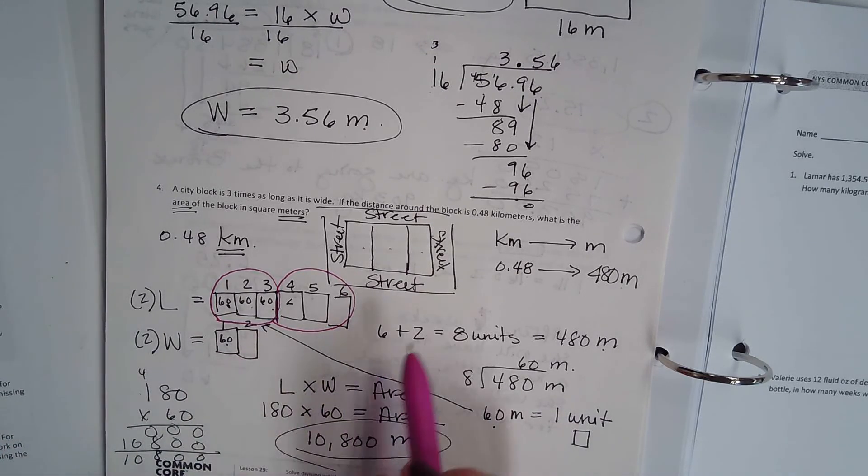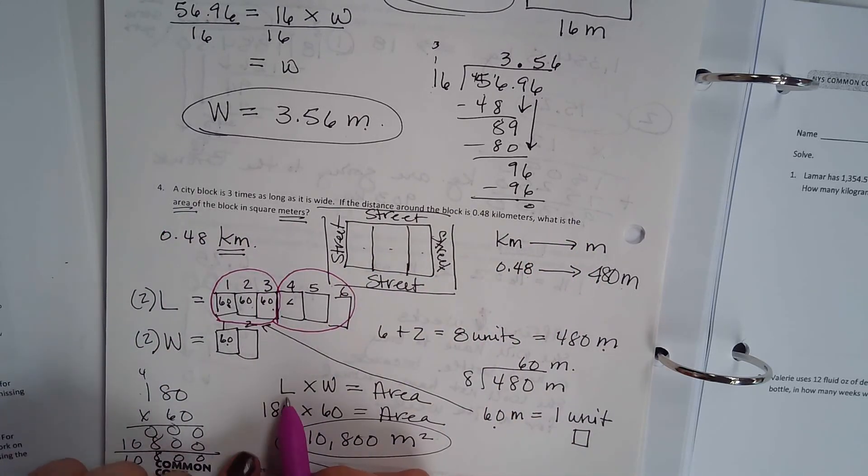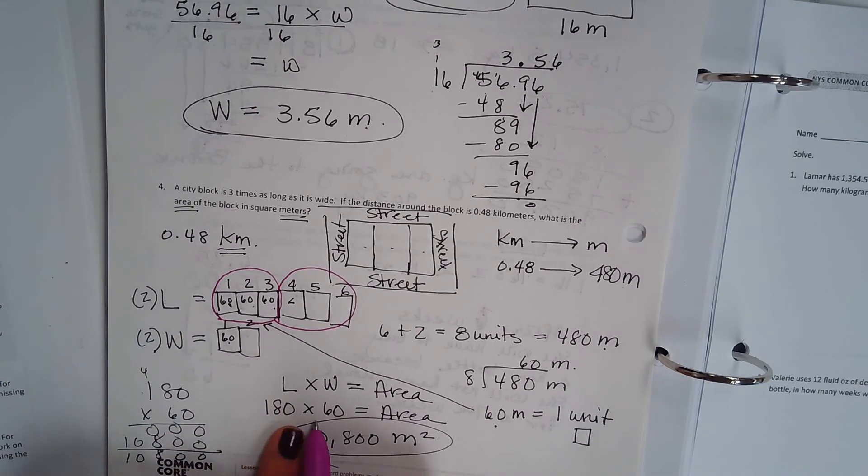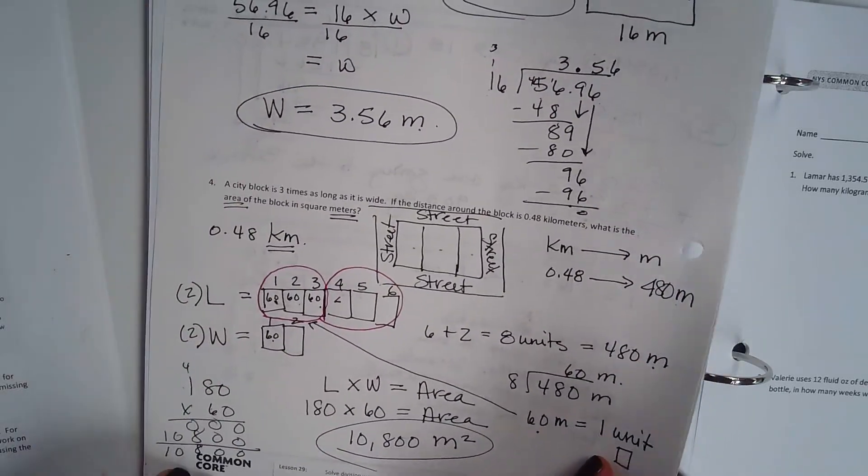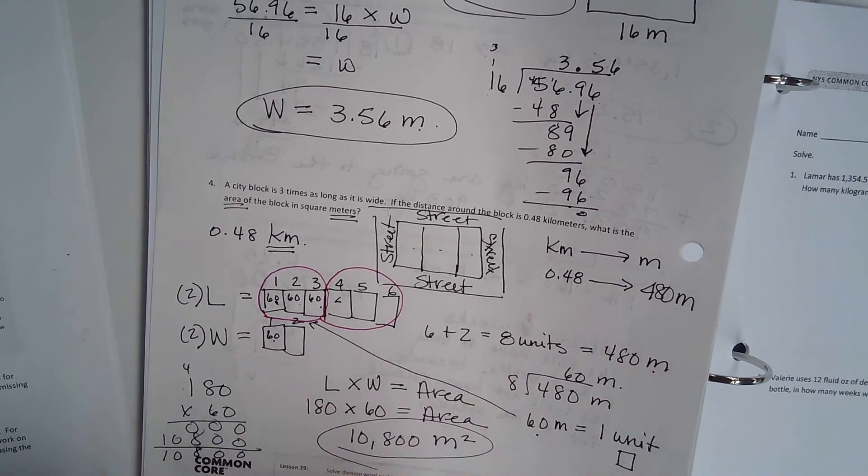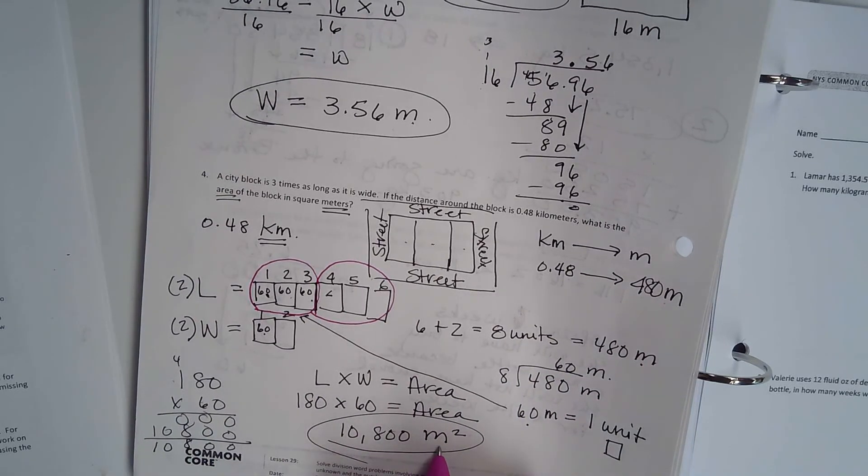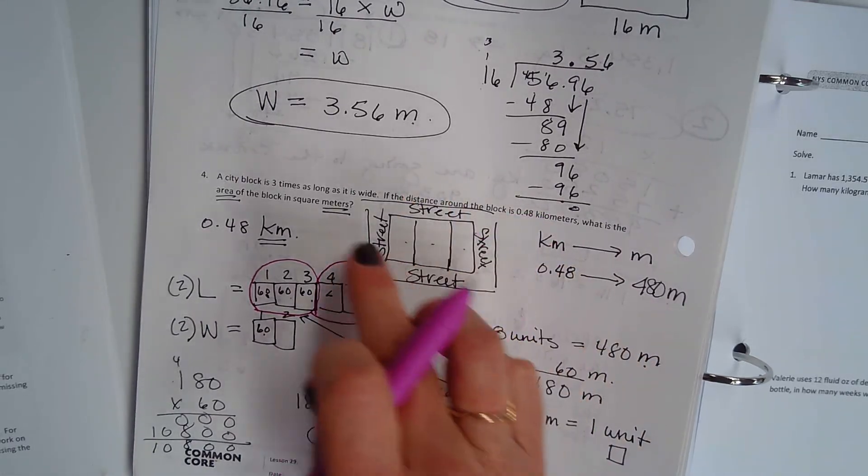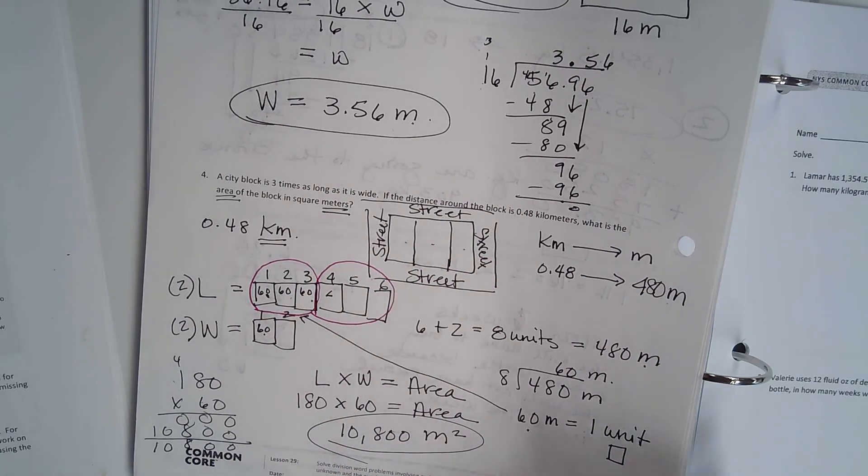So now, what is the area of the block in square meters? My length times width equals area, right? So 180 times 60 equals my area. Now I did do some of the math here off to the side. 10,800 meters squared because area always has to be meters squared because there are two sides, the length side and the width side that you're actually multiplying.